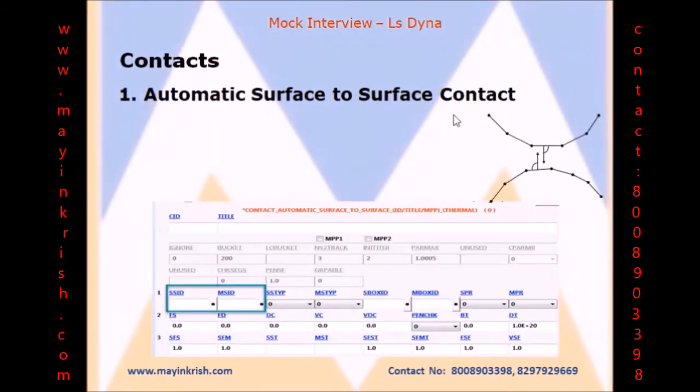Automatic surface-to-surface contact is the best example of symmetric contact. In this, slave nodes will check in the penetration to the master segment and then master nodes will check the penetration to the slave segment.